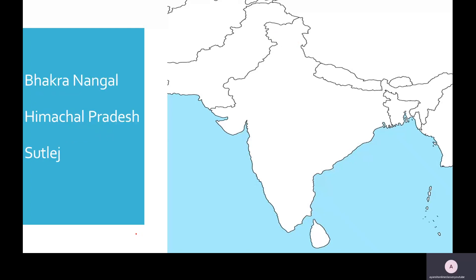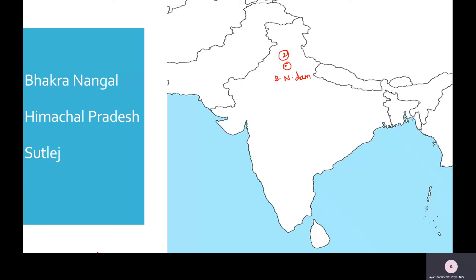Out of eight, we have done the first one. Next is the Bhakra Nangal Dam, present in Himachal Pradesh. Let's move a bit down and come to the state of Himachal Pradesh. As the state boundaries are not present on a physical map, you need to be a bit accurate while locating. A slight difference in location is acceptable, but there should be no major or considerable change. Here, just below Jammu and Kashmir, we locate the Bhakra Nangal Dam in Himachal Pradesh.